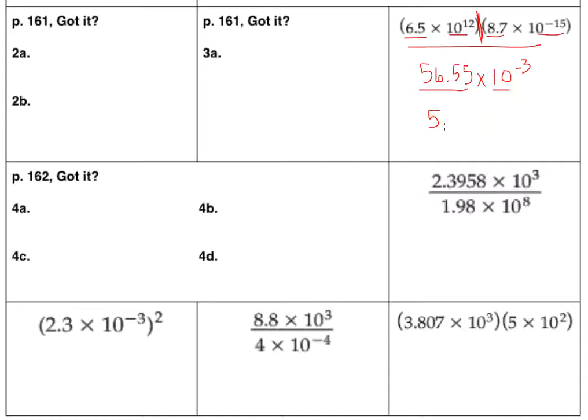So in this case, I have to rename it to 5.655 to make sure that I have a number greater than or equal to 1 and less than 10. But because I moved it back one space, I helped out this negative 3. So I'm going to take away one from that by making it 10 to the negative second power.